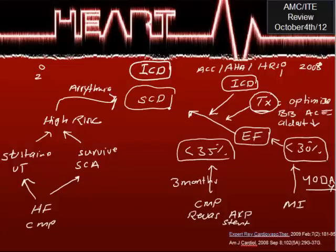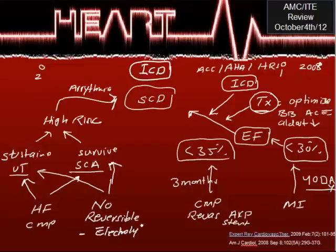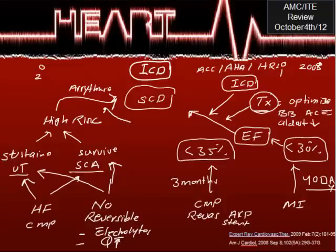Please keep in mind, especially for sustained VT or survived cardiac arrest: you have to make sure there are no reversible causes first. Reversible causes include electrolyte abnormalities — check electrolytes in those patients. Also check for QT prolongation from medications. You must correct the reversible causes first before considering ICD. If you correct the reversible causes and the risk remains, then ICD is indicated.